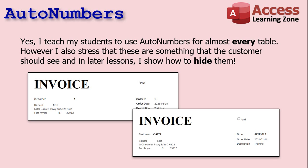Other people have emailed me asking: if auto numbers are so bad to be visible, why do you teach them in your beginner classes? Because it's easier for beginners — an auto number just starts at one and counts up. But in my later classes, I do show you how to hide those things — hide the customer number, hide the order number. We've got to walk before we run, folks.